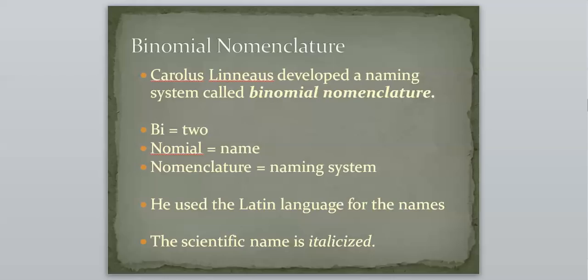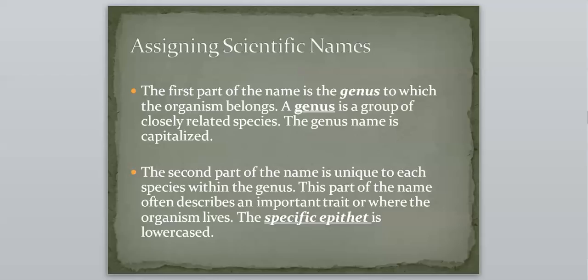So when we talk about the scientific name, which is the part of his two-name naming system, the first part of the name is the genus to which the organism belongs. We talked about genus in our introduction activity, and it's just a group of closely related species. So when you write that down, you're going to capitalize it. So when we're writing, the genus is always capitalized.